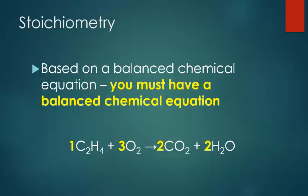Let's look at the steps we're going to need to solve a stoichiometry problem. Stoichiometry is about chemical amounts, and we need a balanced chemical equation — you must have a balanced chemical equation. Many times the equation will already be balanced, but if it's not, you will have to balance it and always check that it's balanced before proceeding with the stoichiometry problem.